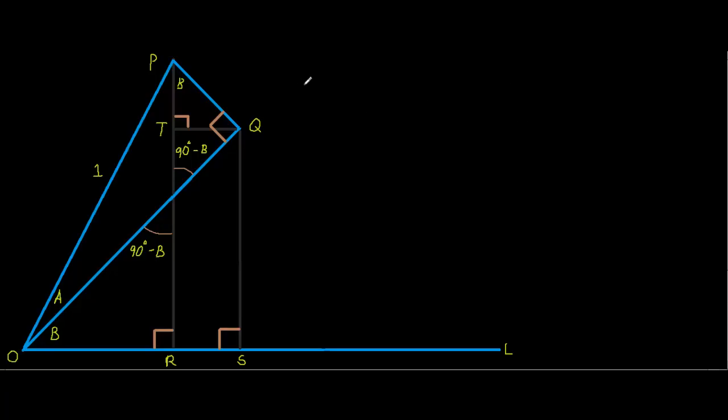Now the first thing we need to know is what is sin(A+B). So we're going to put opposite over hypotenuse here. Now if you look at the triangle OPR and look at this angle here, we can see that this angle is A plus B. We can see that the opposite side is PR, so we're going to put PR here.